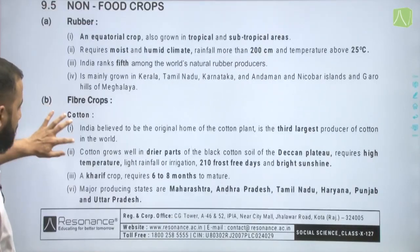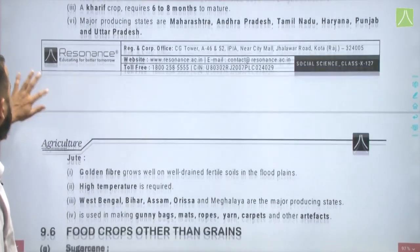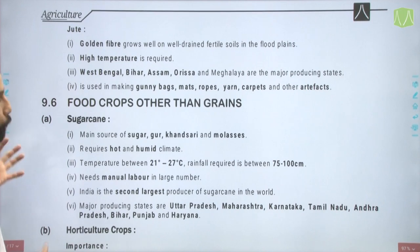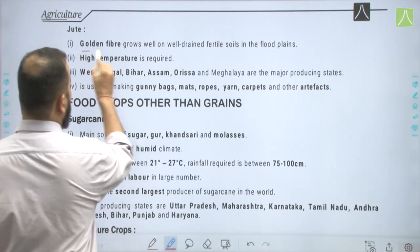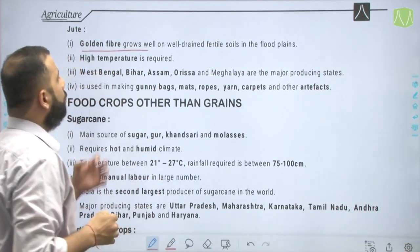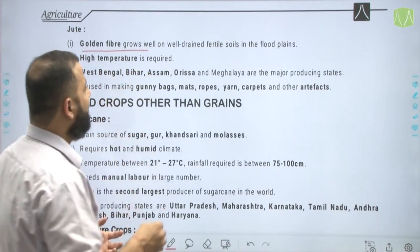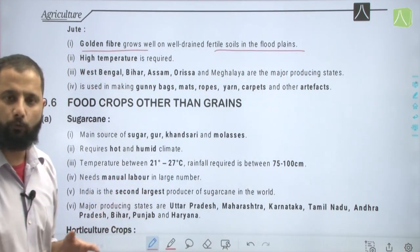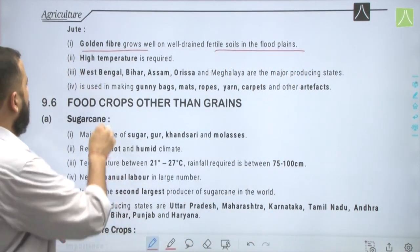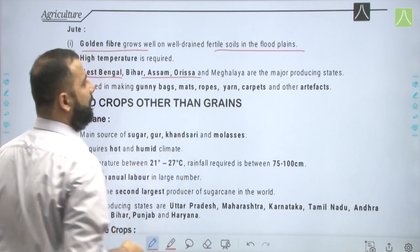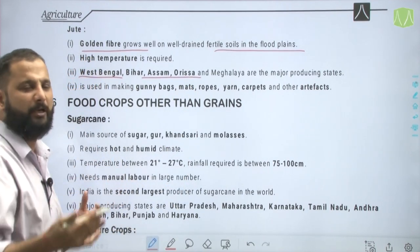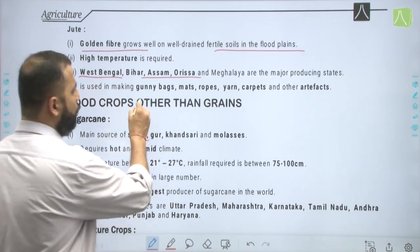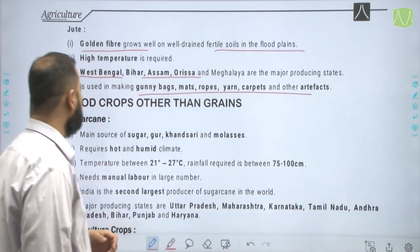Moving on to jute — known as the golden fiber, it grows well on well-drained fertile soils in flood plains and requires high temperature. Major producing states are West Bengal, Bihar, Assam, and Odisha. Jute is used in making gunny bags, mats, ropes, yarn, carpets, and other artifacts.